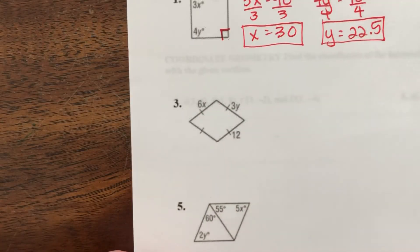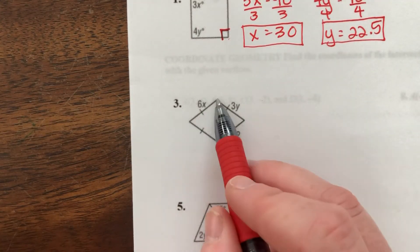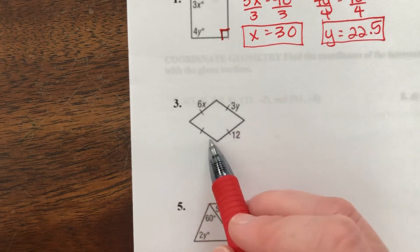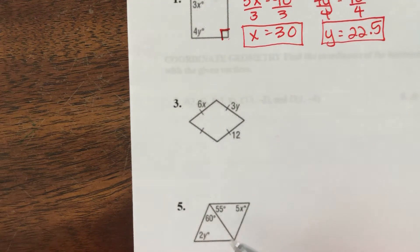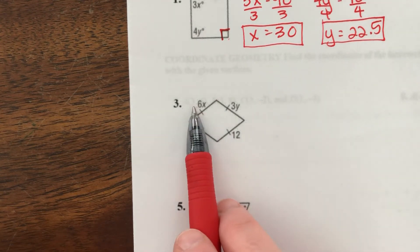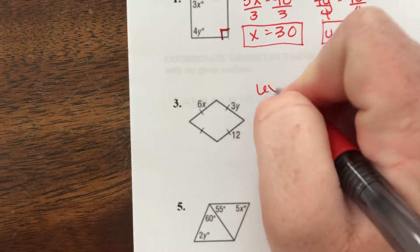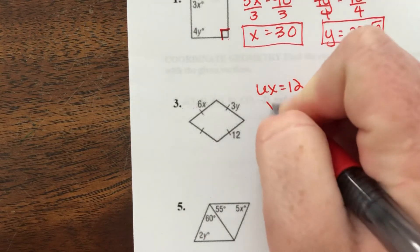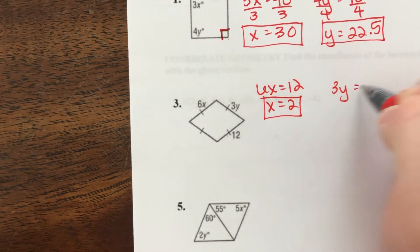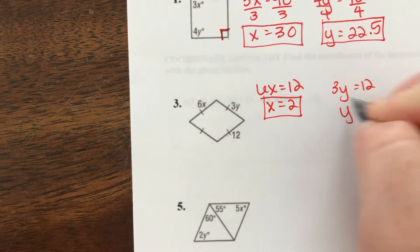Okay, number 3. I have all these sides marked congruent. And it told me in the directions it's a parallelogram. So I know all the sides are congruent to each other. I can set them equal to each other. 6x equals 12, so x equals 2. And 3y and 12 are marked congruent, so 3y equals 12. Divide by 3, y equals 4.